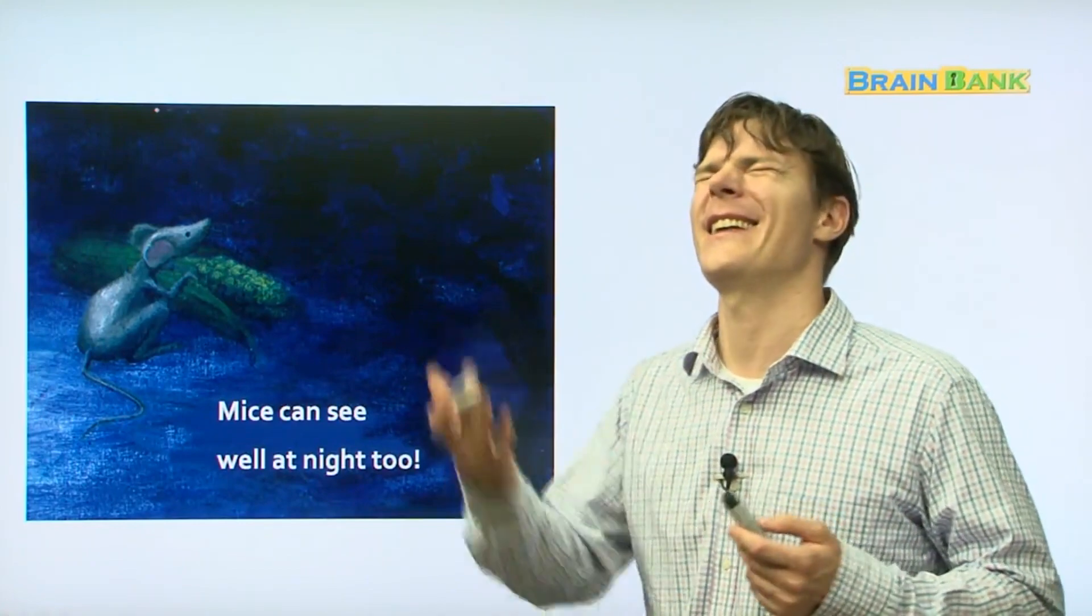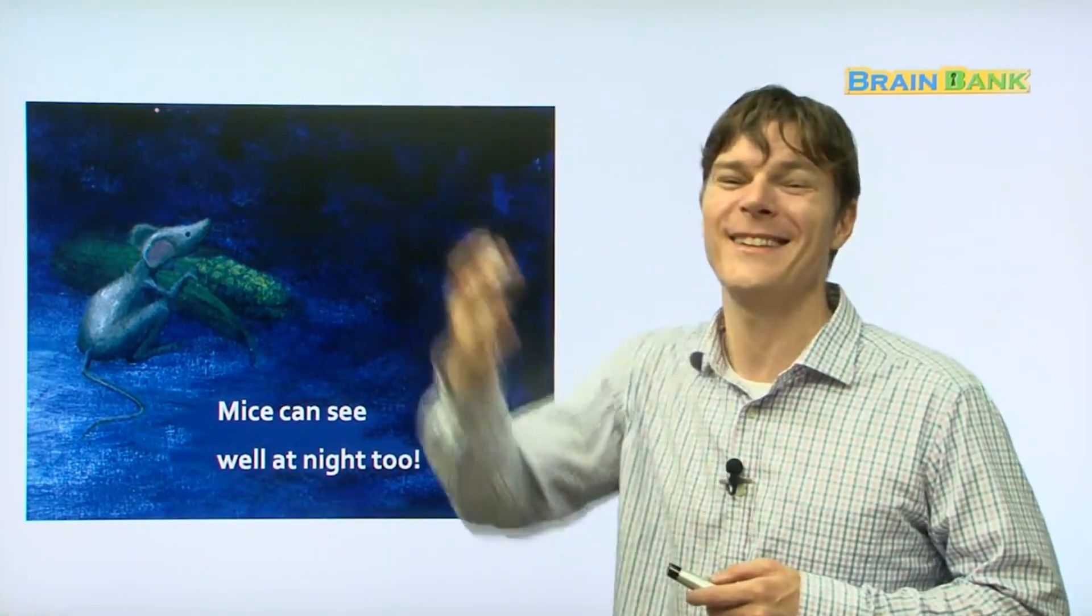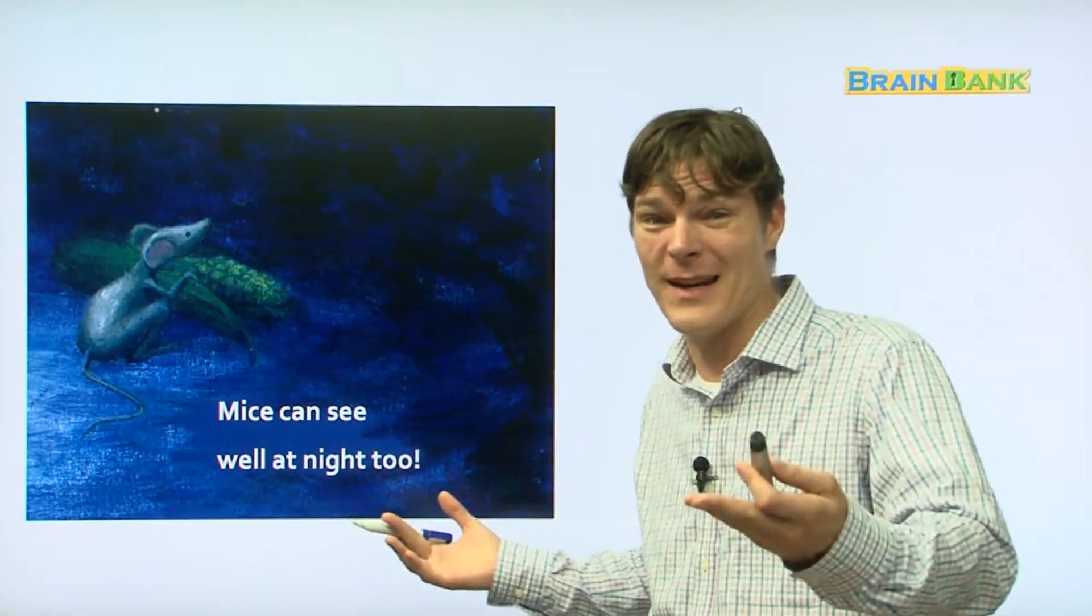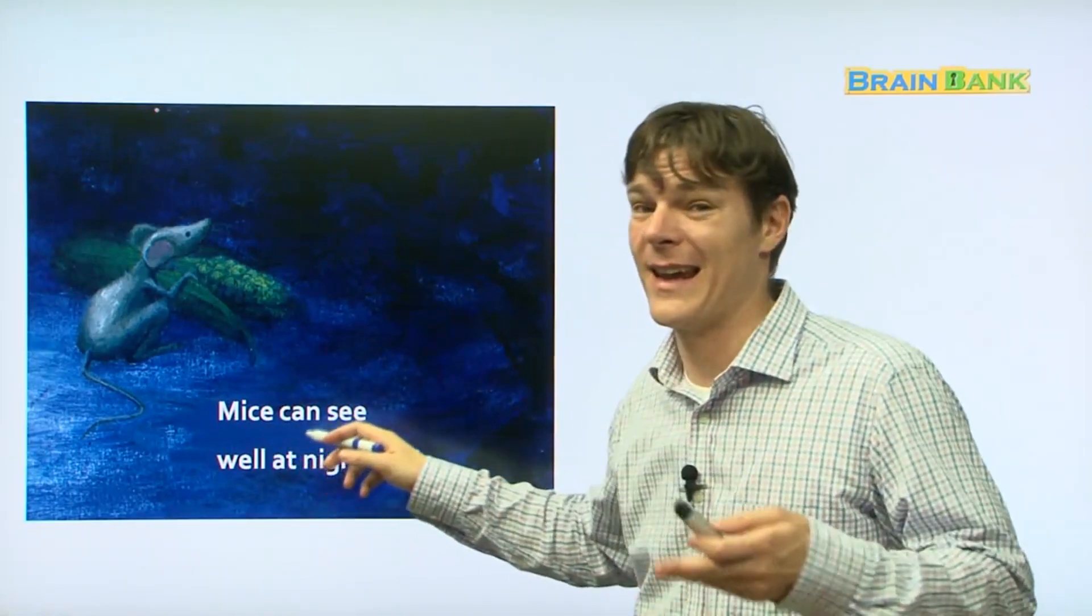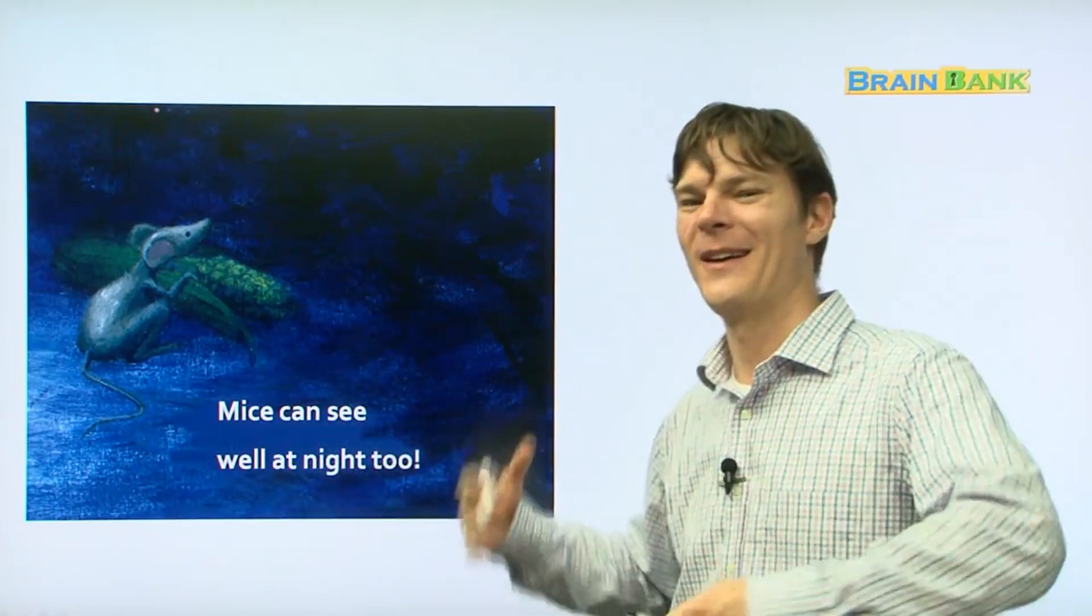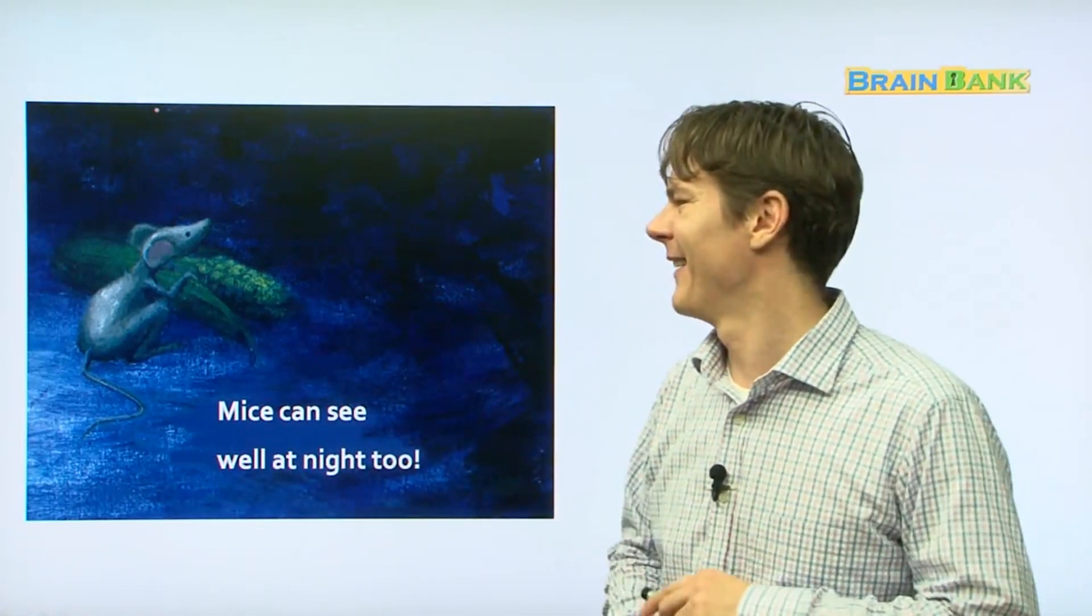Mice can see well at night, too. Oh my goodness. I didn't know that. Mice can see well at night, too. Very good. Okay. So, boys and girls, in the book, we learned that foxes, cats, owls, and mice can all see very well in the dark.